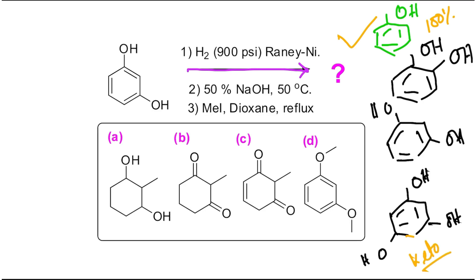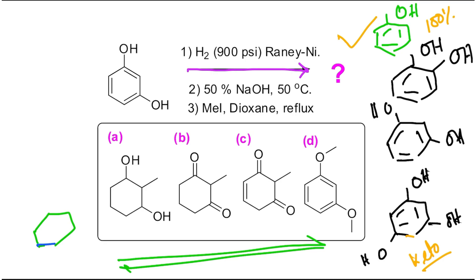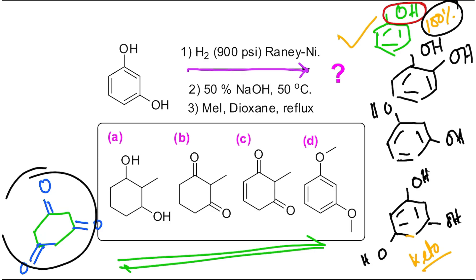In resorcinol there is a mixture between keto and enol forms, while phloroglucinol prefers to remain in keto form. The keto form is the cyclohexadienone-type structure. This is because aromaticity versus keto-enol stabilization are competing - from a normal standpoint keto is more stabilized compared to enol, that's why carbonyl groups prefer to remain in keto form. But in phenol, with only one hydroxyl, aromaticity is the driving force keeping it 100% enol.